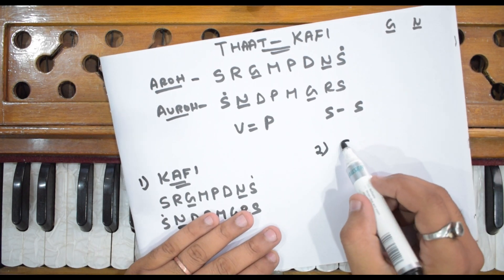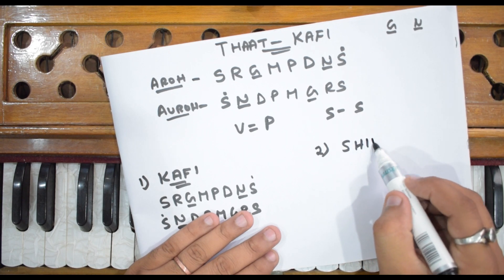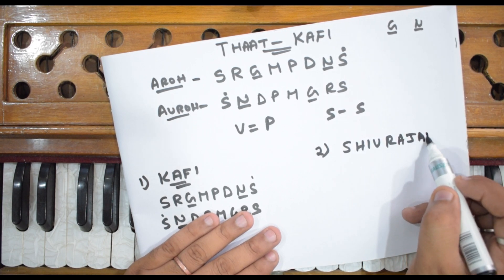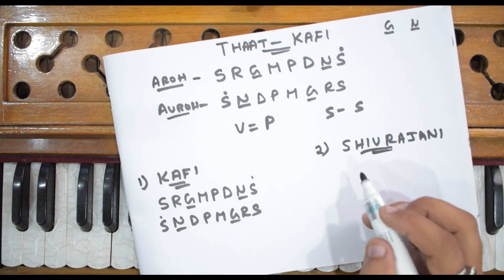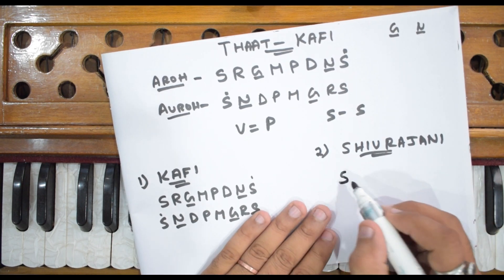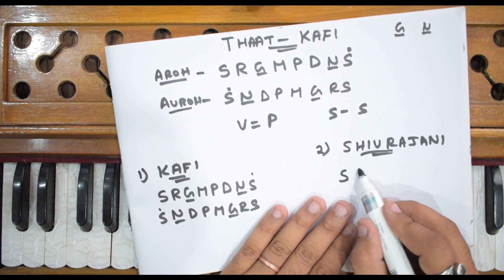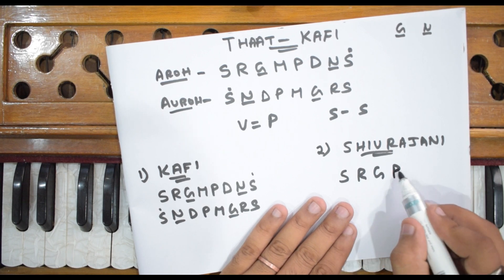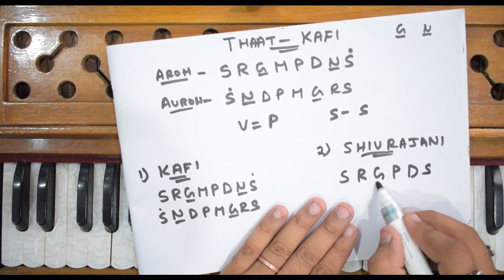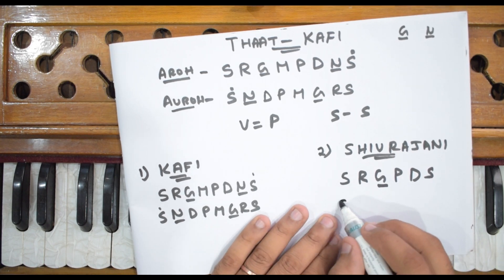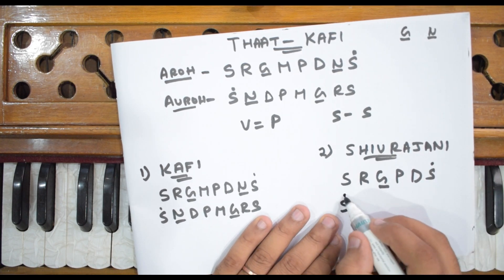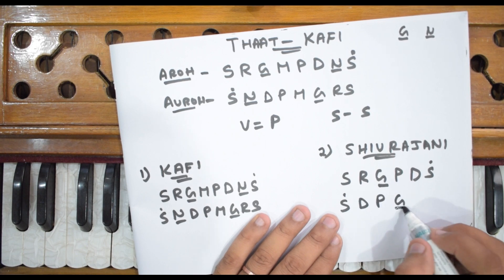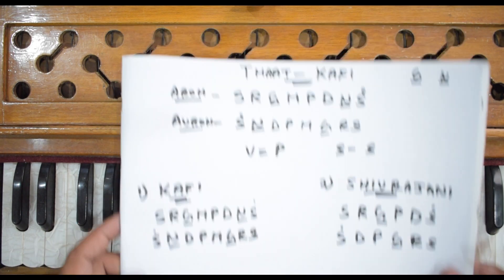After Raag Kafi, the second raag is Raag Shivranjani. This raag has 5 swaras and they are: Sa, Re, Komal Ga, Pa, Dha, Sa. The avaroha is: Sa, Dha, Pa, Komal Ga, Re, Sa. Let me show you how this raag goes.